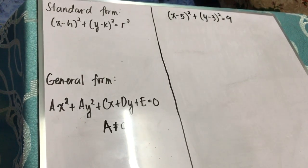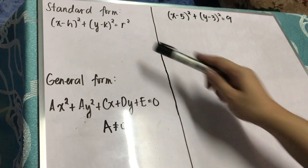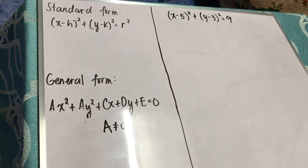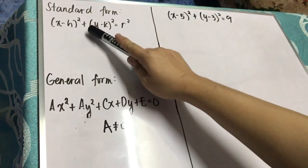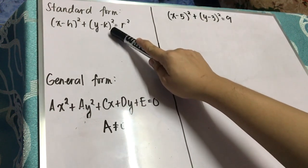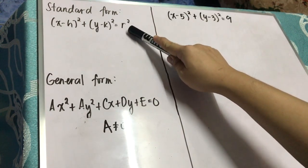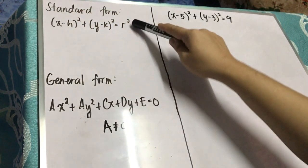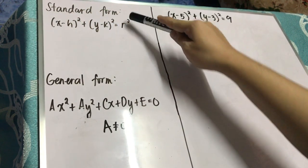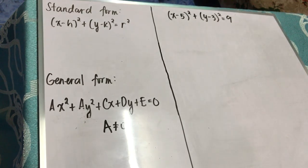Good day STEM students! Today I will teach you how to rewrite the equation of a circle from standard form to general form. Recall the standard form of a circle: the quantity of x minus h squared plus the quantity of y minus k squared equals r squared. And if we expand the standard form of a circle, we can actually derive the general form of a circle given by this equation.